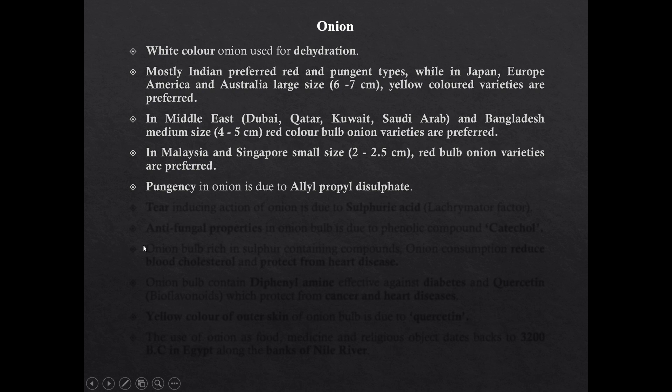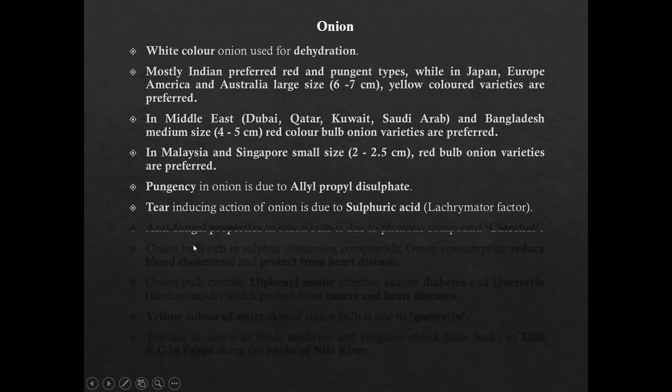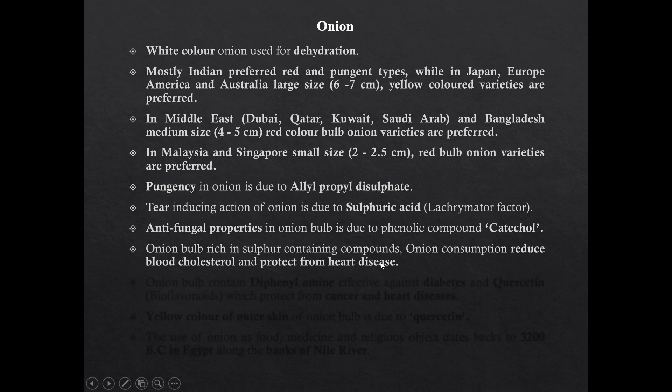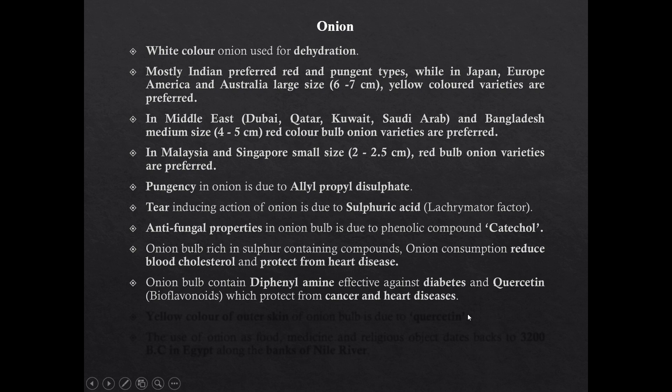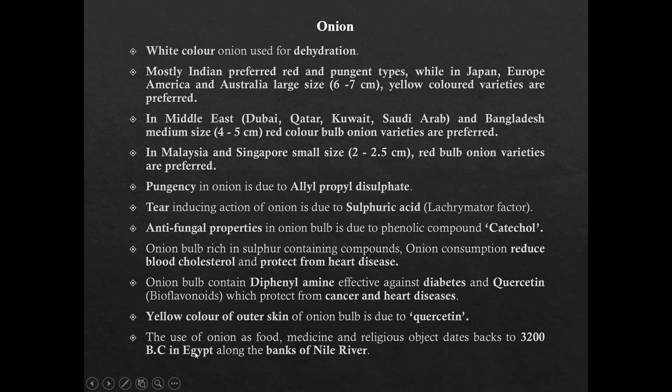Pungency in onion is due to allyl propyl disulfide. Tear-inducing action of onion is due to sulfuric acid. Antifungal properties of onion bulb are due to the compound catechol oil. Onion bulb is rich in sulfur-containing compounds. Consumption of onion reduces blood cholesterol and protects from heart disease. Onion bulb contains diphenylamine which is effective against diabetes. And quercetin protects from cancer and heart disease. Yellow color of the outer skin of onion bulb is due to quercetin.